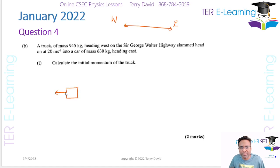So you have your truck traveling west at 945 kilograms, slamming into a car traveling east. The mass of the car is 630 kilograms. In terms of velocity, the only velocity we know is that the truck is traveling at 20 meters per second. The first part of the question asks us to work out the initial momentum of the truck.